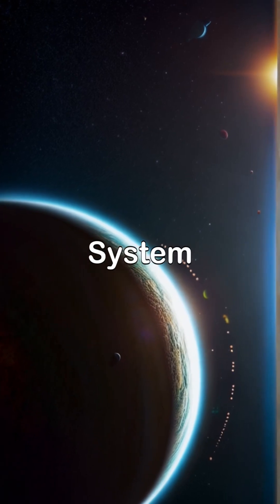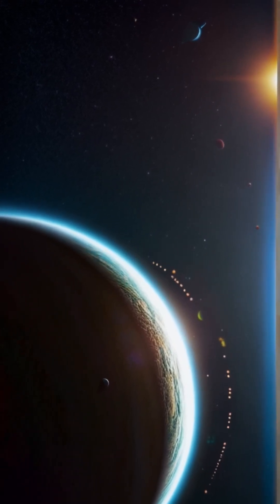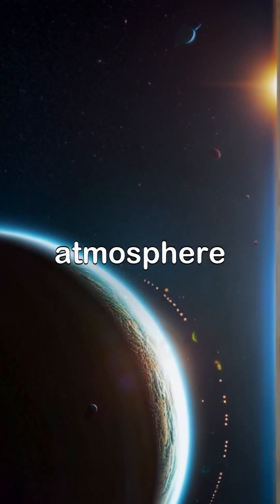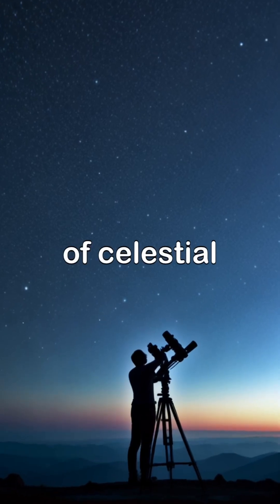Within our solar system, eight planets orbit the sun, each unique in composition and atmosphere, showcasing the diversity of celestial bodies.